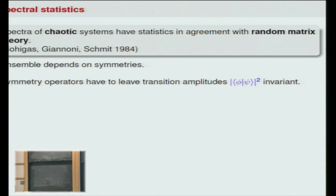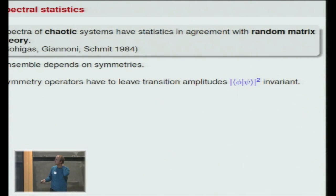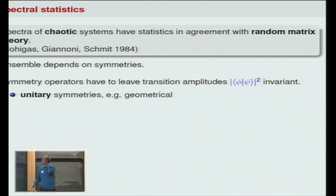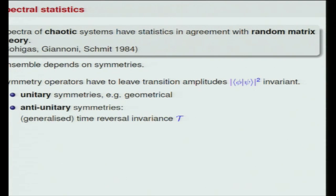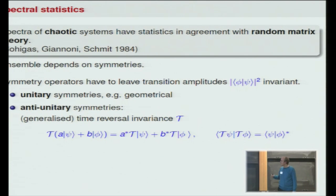So we are only interested in symmetries that, if applied to two wave functions, leave the absolute value squared of the overlap between these two wave functions — the transition probabilities — invariant. There are two ways to realize this. The simplest way is to have unitary symmetries applied to the two wave functions; they leave the overlap directly invariant. But there's another possibility: to have anti-unitary symmetries or generalized time reversal symmetries. These, if applied to two wave functions, complex conjugate the overlap, and therefore the transition probability is left invariant.